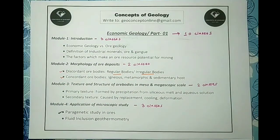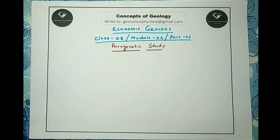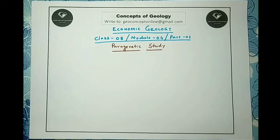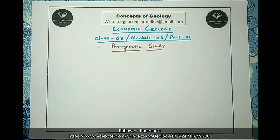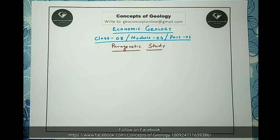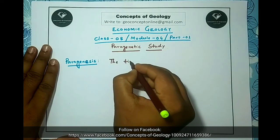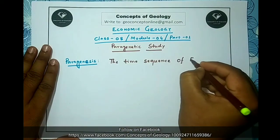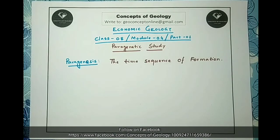Before starting, one thing we should clarify: the term 'paragenesis' has also been used, particularly in some European literature, to refer to characteristic mineral assemblages — for example, a particular mineral assemblage in a metamorphic phase. But here we are using it only in reference to sequential formation of minerals. So the term paragenesis means the time sequence of formation. Our objective is to identify which mineral formed first and which came last into existence.